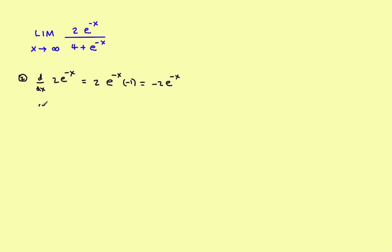Now let's find the derivative of the denominator. You've got 4 plus e to the negative x. The derivative of 4 is a constant, so it's going to be 0. Then you'd have the derivative of e to the negative x, which is the original function times the derivative of its exponent. So for the denominator, you get negative e to the negative x. That takes care of step 2.